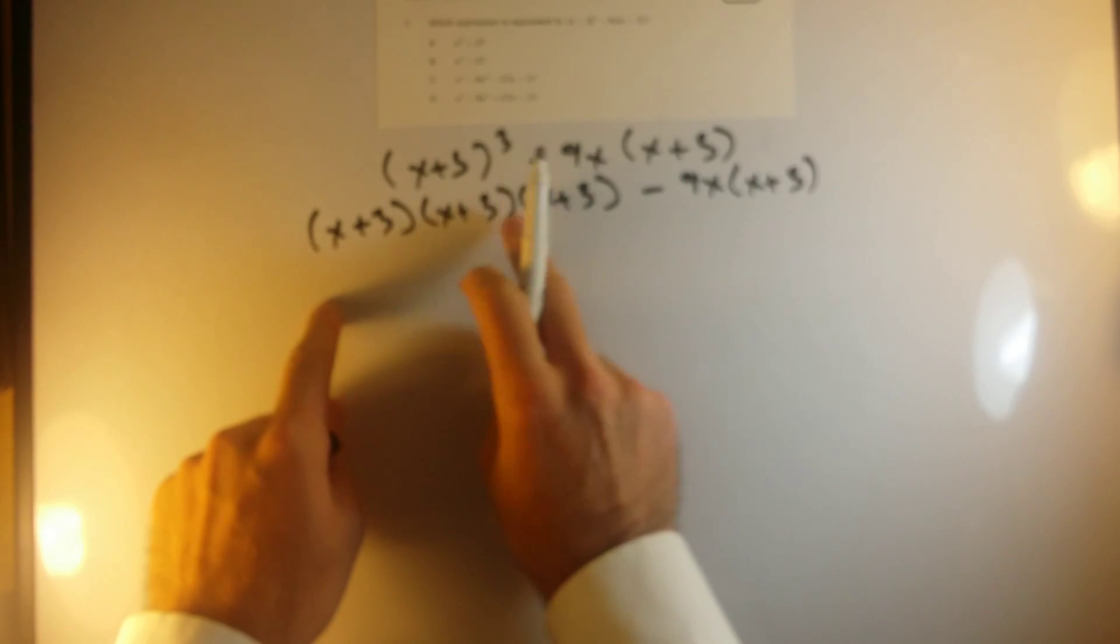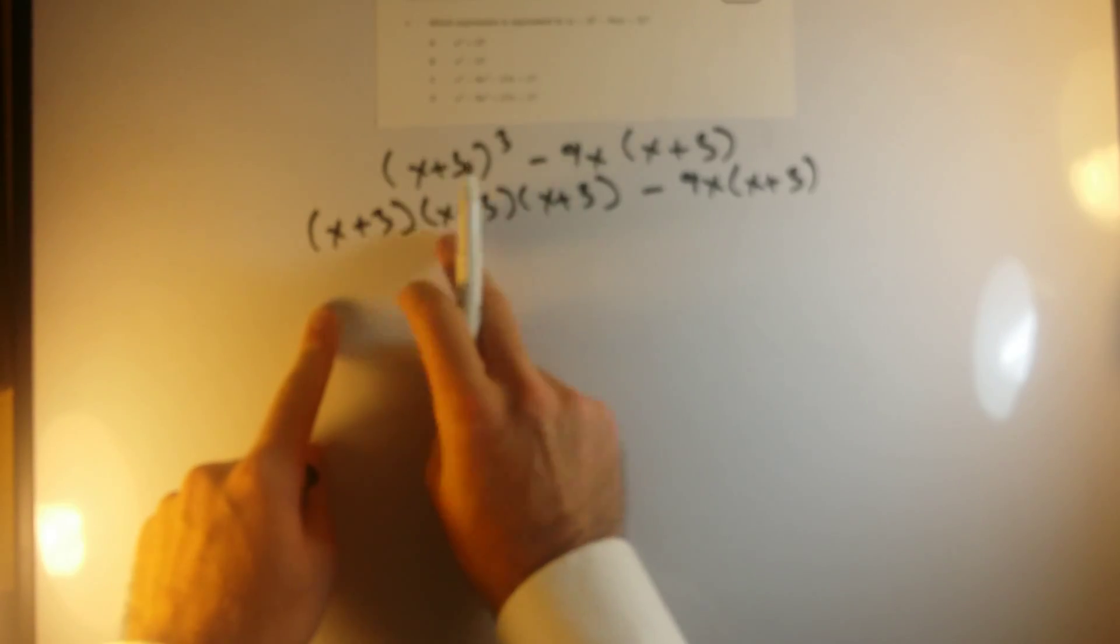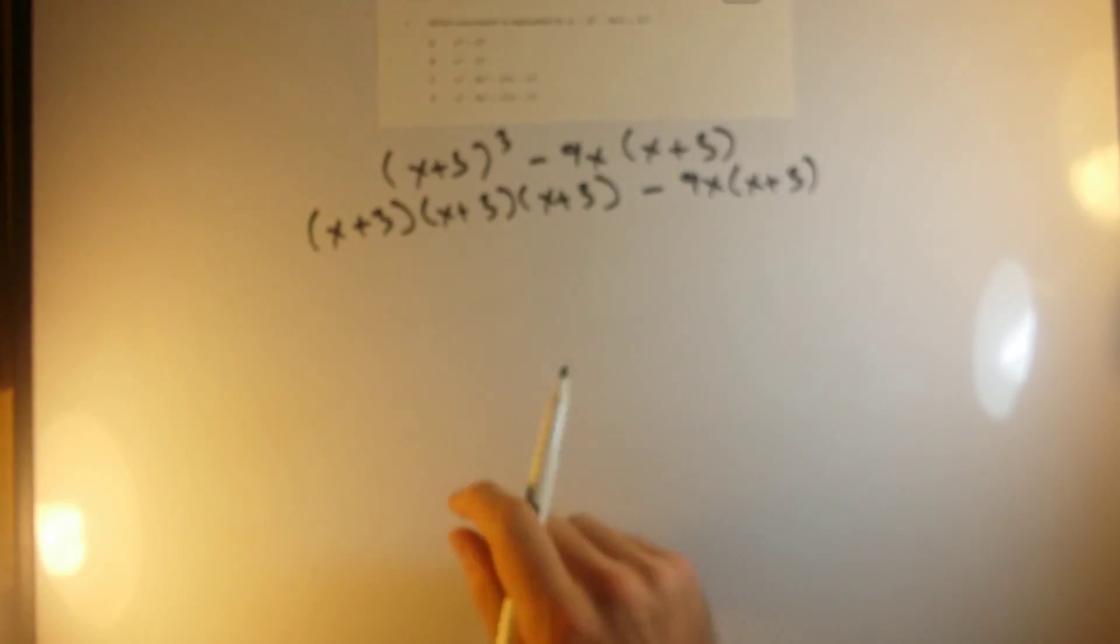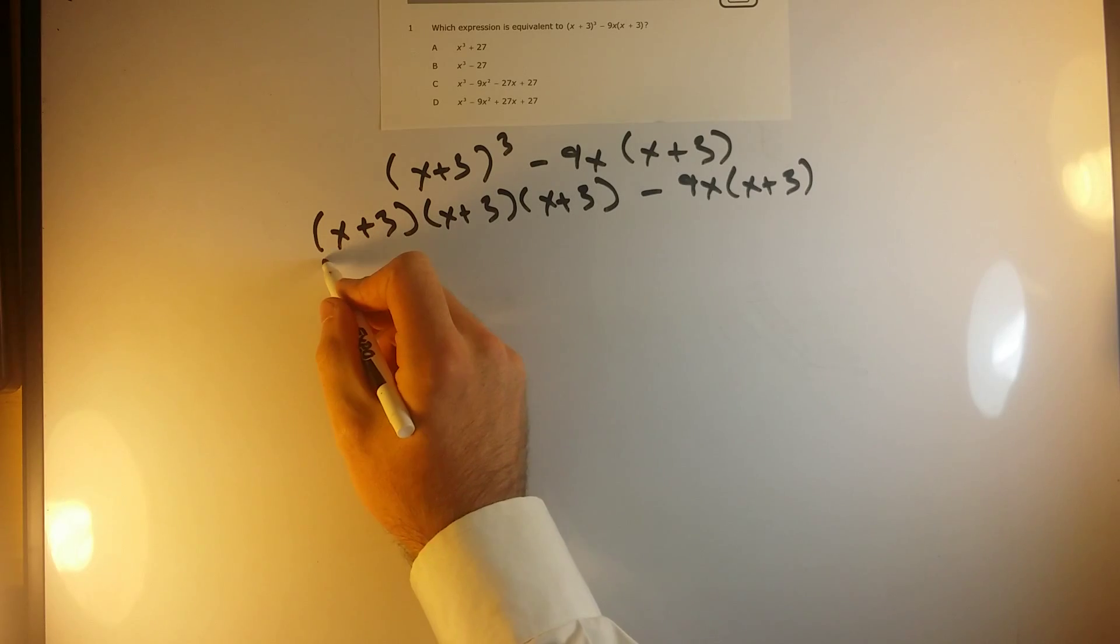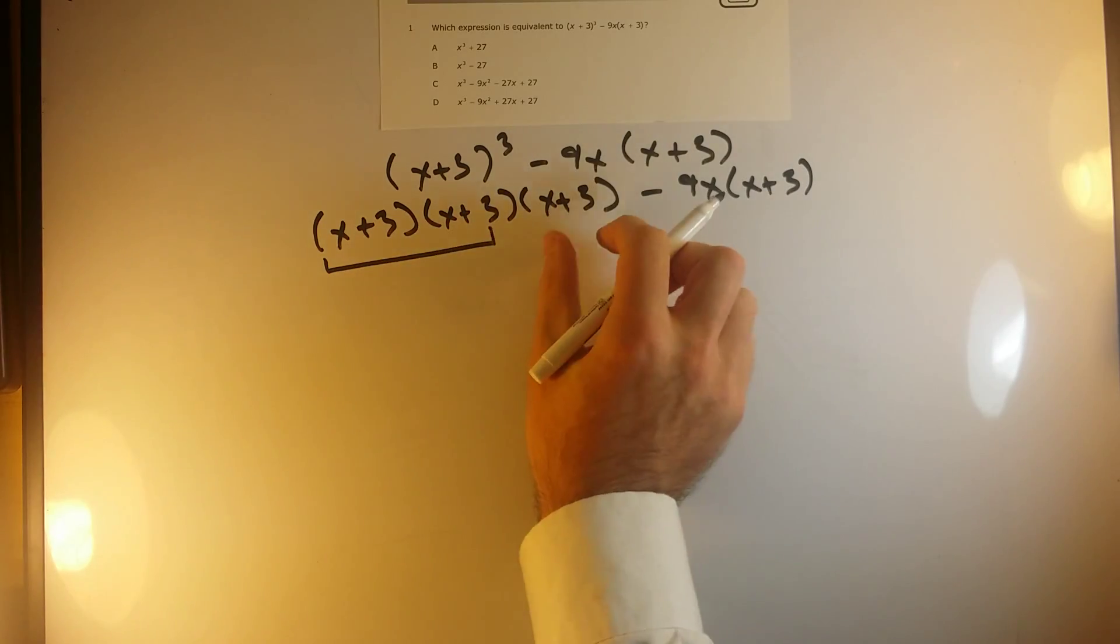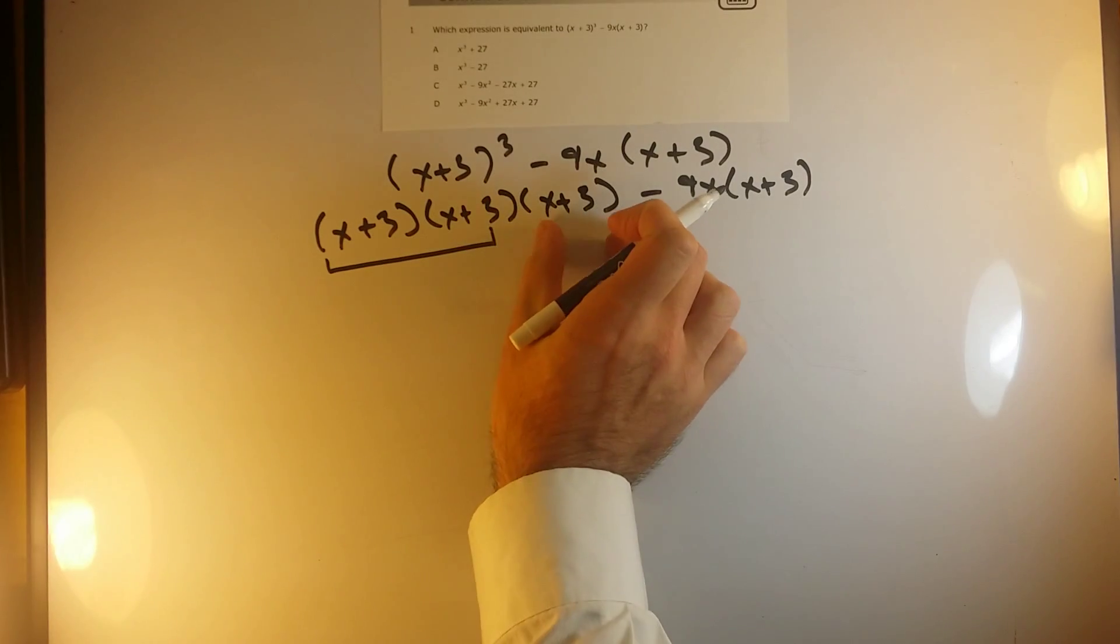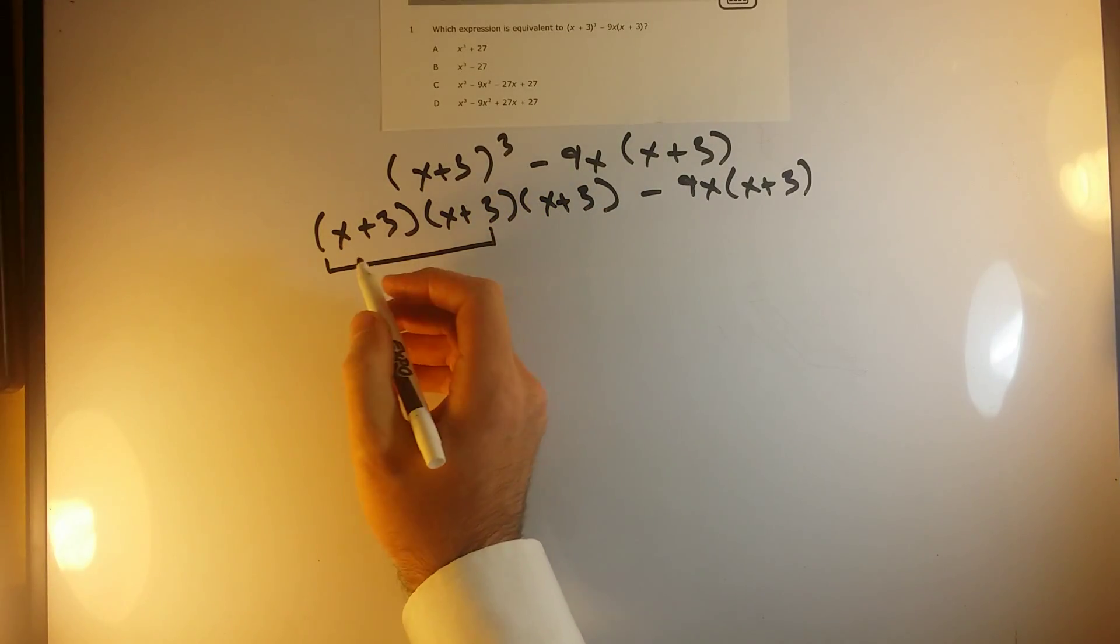So when you're simplifying, when you have three binomials that you're multiplying by each other like this, or three polynomials, you can only distribute two at a time. So I'm first just going to do these two, and then I'll multiply the product of those by my last binomial.